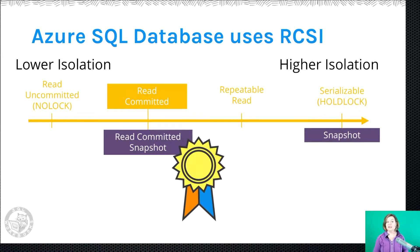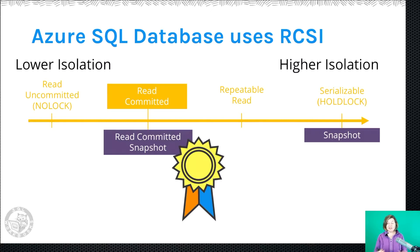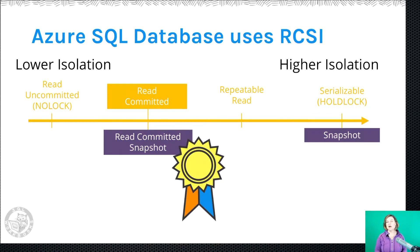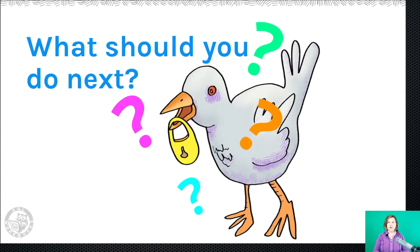Azure SQL Database is primarily designed for OLTP apps — lots of smaller inserts, updates, and deletes, not data warehousing. The fact that RCSI is the default in Azure SQL Database is really a statement that for OLTP applications, it is worth taking the time to avoid those race conditions to get better performance and more consistent isolation. Read Committed Snapshot uses those versions to avoid counting rows twice, missing rows, or producing combinations of data that never existed.